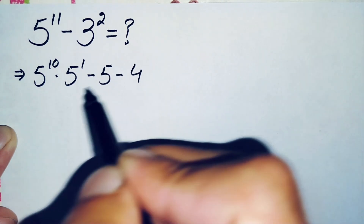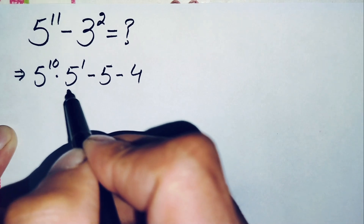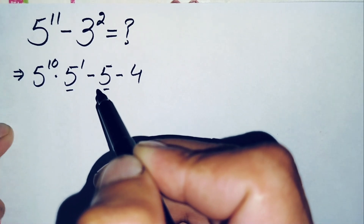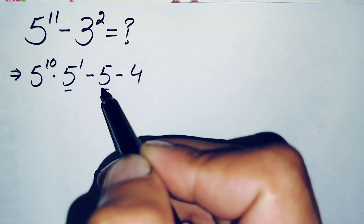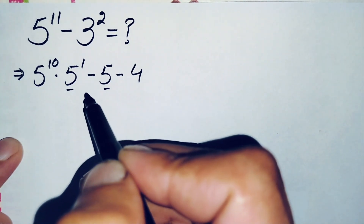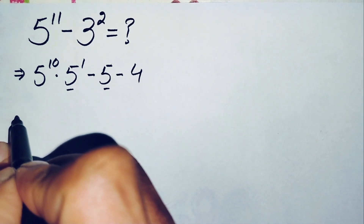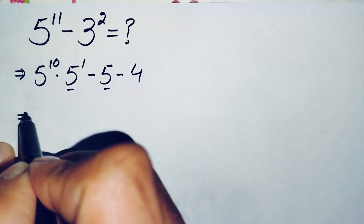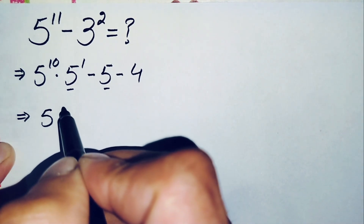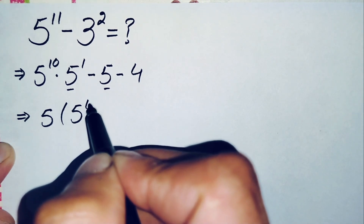Now here, 5 raised to power 1 is common in both terms, so we'll take it out as a common factor. Taking 5 common, this will become 5 times, and inside the bracket we have 5 raised to power 10 minus 1, and minus 4.